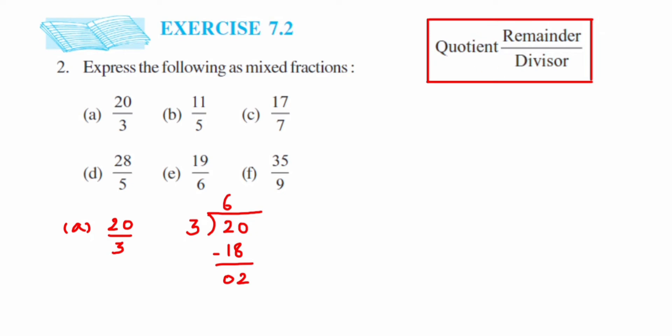After this, you have to write the mixed fraction in this way: quotient is written here, remainder is written here, and divisor at the bottom. The quotient is the answer you got after dividing, so the answer we got is 6.